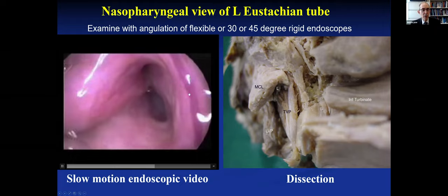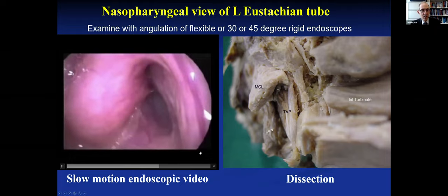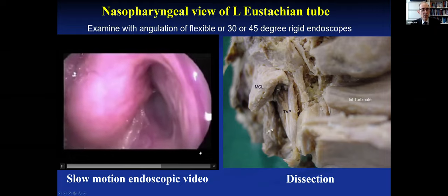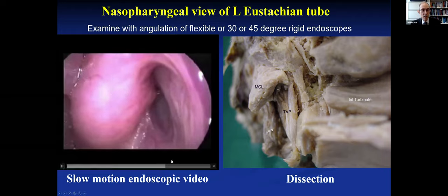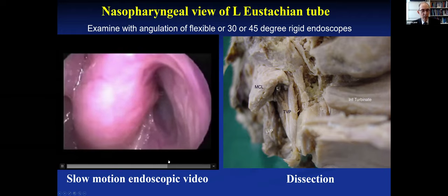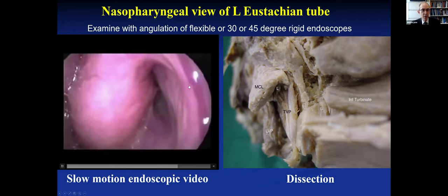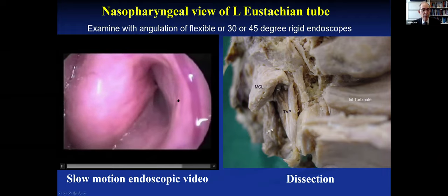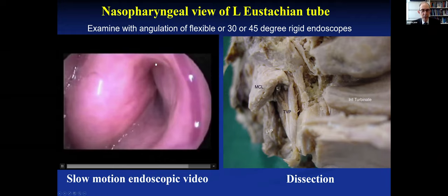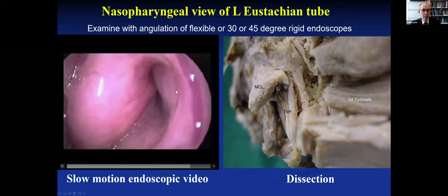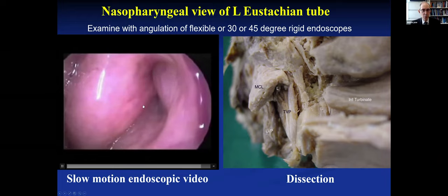Both muscles relax simultaneously to close. This one-two effect — you can see it in real time without slow motion: levator followed by tensor, and how well it opens. We've been trained to look at the torus, but really we want to look at the valve — these two walls: the membranous wall and the cartilaginous wall.